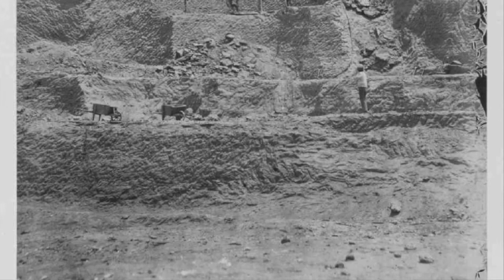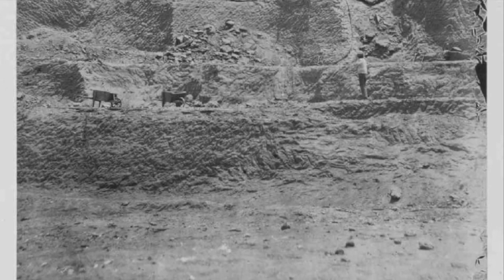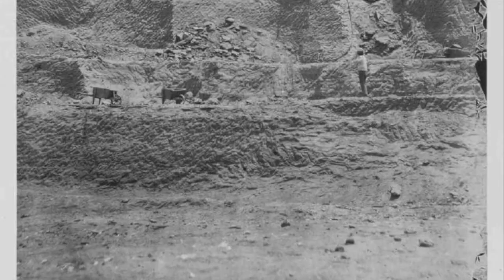As guano increased in value, the mountain was taken down — and it was taken down by hand. A willing labor force for digging guano was not easy to find. Having legally abolished slavery in 1854, Peru found itself without a captive labor force to do the punishing work. Britain had abolished slavery throughout the British Empire in 1833, yet had a great stake in the profit of guano sales. To replace the newly emancipated workforce, Peru and Britain participated in a new form of slavery by hiring Chinese workers under false contracts of free labor.